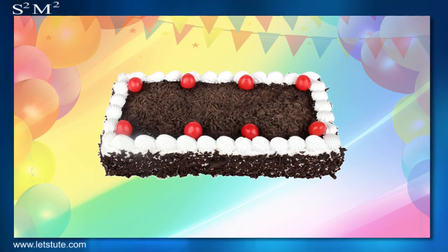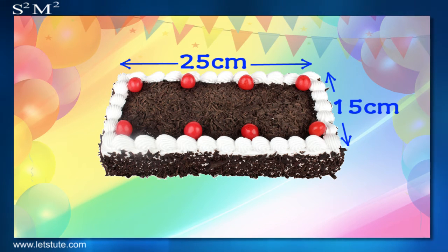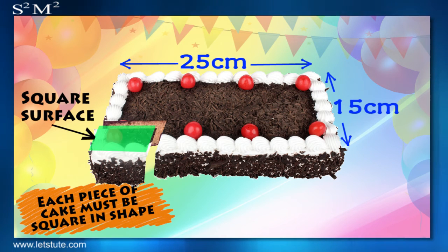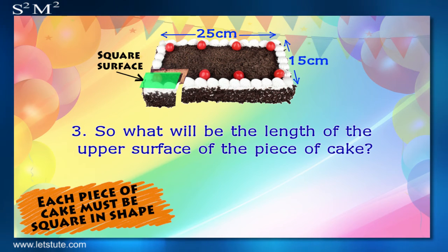The party started and a cake of length 15 cm and width 25 cm is to be distributed equally amongst your friends without wasting. But each piece of cake must have a square-shaped upper surface. So, what will be the length of the upper surface of each piece of cake?